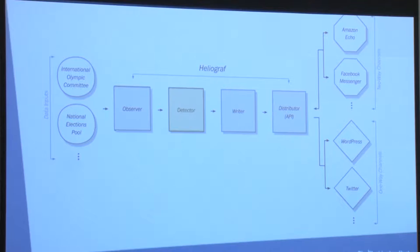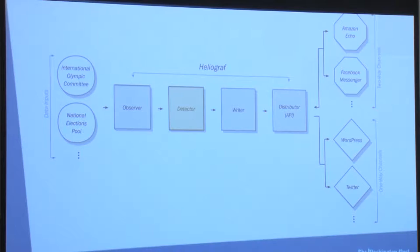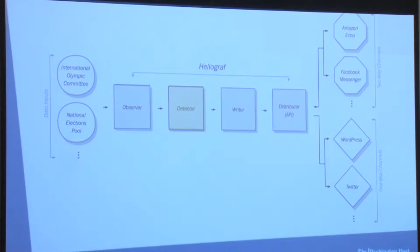Not all changes to data are meaningful. The Detector defines the concept of a trigger and an event. A trigger is based on the previous and current state of a particular entity. In the case of the primaries, this can be precincts reporting going from zero to anything greater than zero — the corresponding event would be that the first returns are in. Events for the primary election could include: votes starting to come in, a race becoming close, precincts reporting increasing by 10%, a race being called, 100% of precincts reporting, etc. The reason we define so many events is that if we only have one primary on a particular day, we need a way to keep a user engaged and informed.